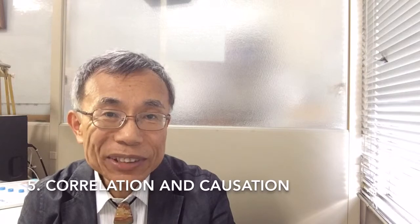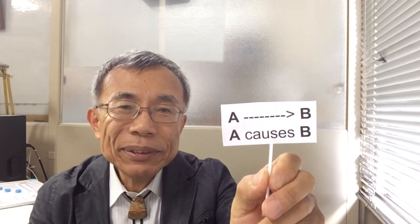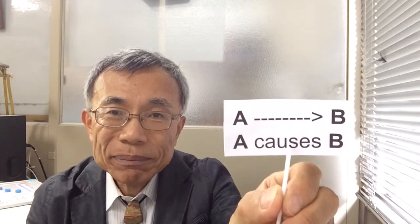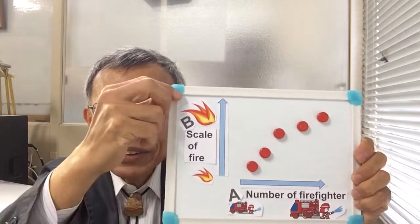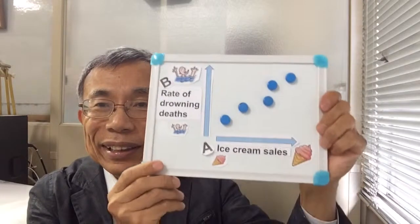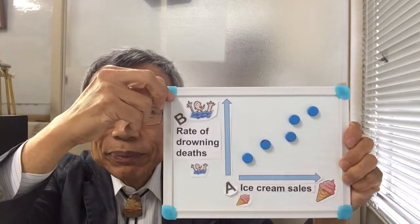However, although correlation can suggest causation, it doesn't imply causation. If we assume direct causation between A and B, expressions such as 'A causes B' are derived. More specifically, for Case 1: the number of firefighters causes the scale of fire. For Case 2: ice cream sales causes the rate of drowning deaths. Are these expressions correct? Actually, neither of these are correct.